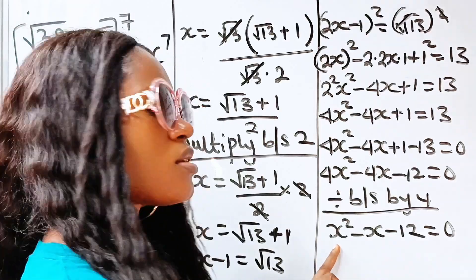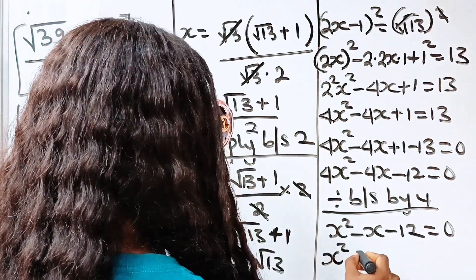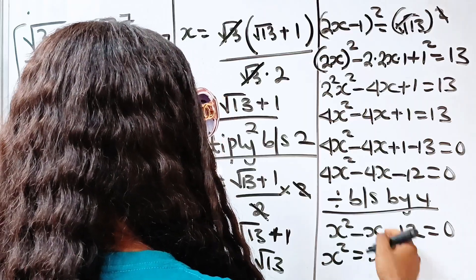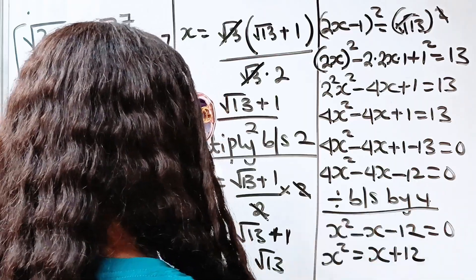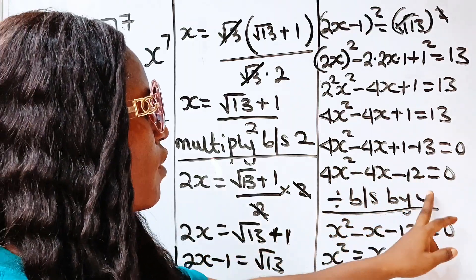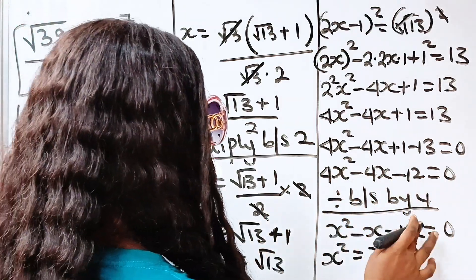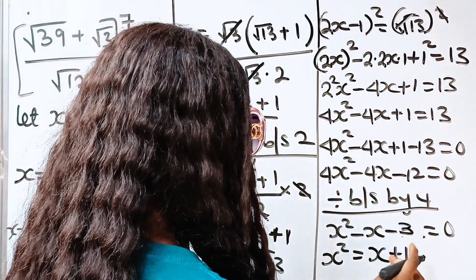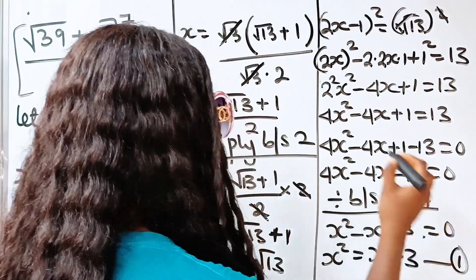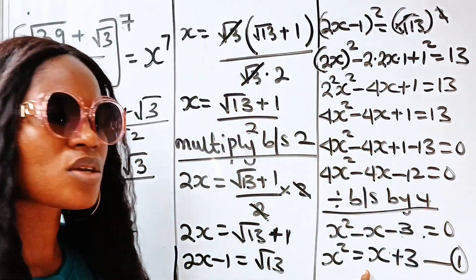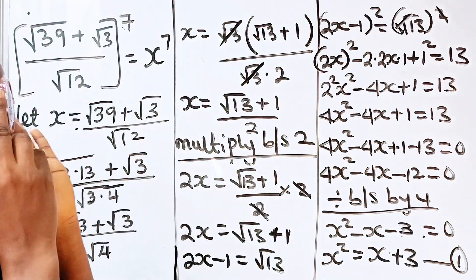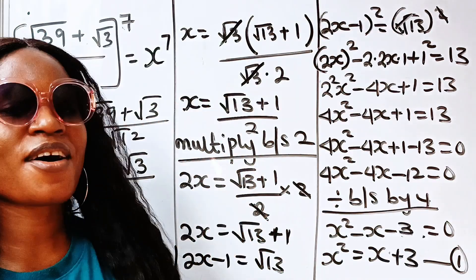Making x squared the subject of the formula, we get x squared equals x plus 3. This is the most important equation in this particular problem that we are solving.